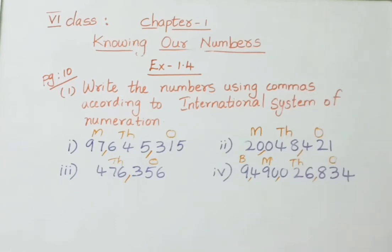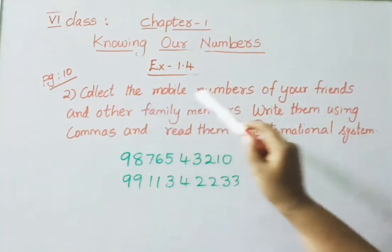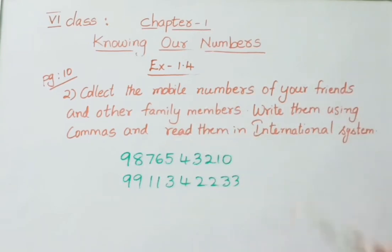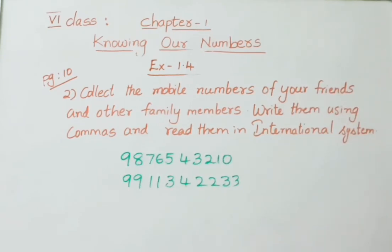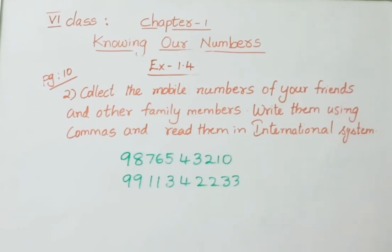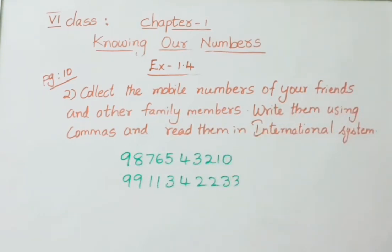Now the second sum: collect the mobile numbers of your friends and family members, write them using commas, and read them in the International system. Children, write any friend's or family member's mobile number, separate it using commas from right to left three digits at a time, and then read it in the International system. I have written some example numbers here.